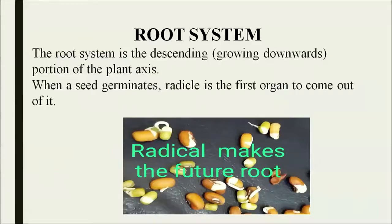Hello learners, we are starting with our topic root systems. You have already studied that root is the underground system of any plant and it develops from the radicle. When the seed germinates, the radicle is the first organ to come out of it and makes the root.